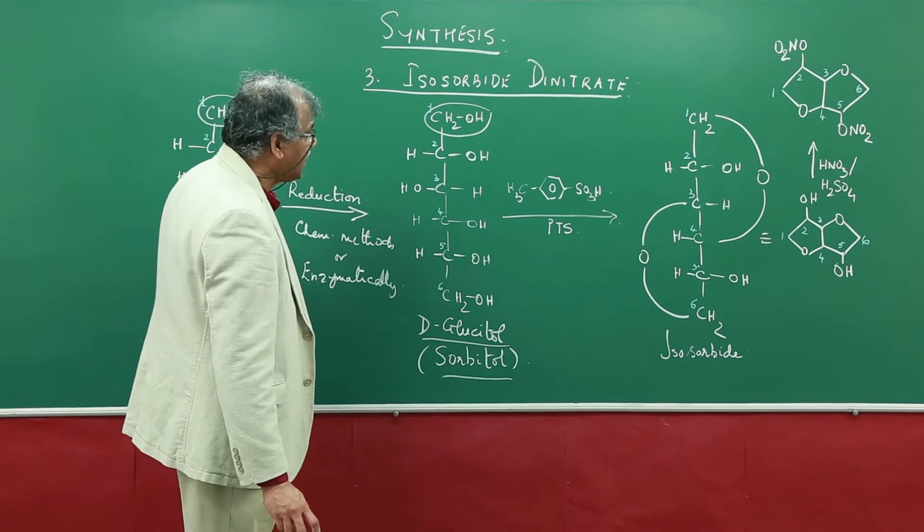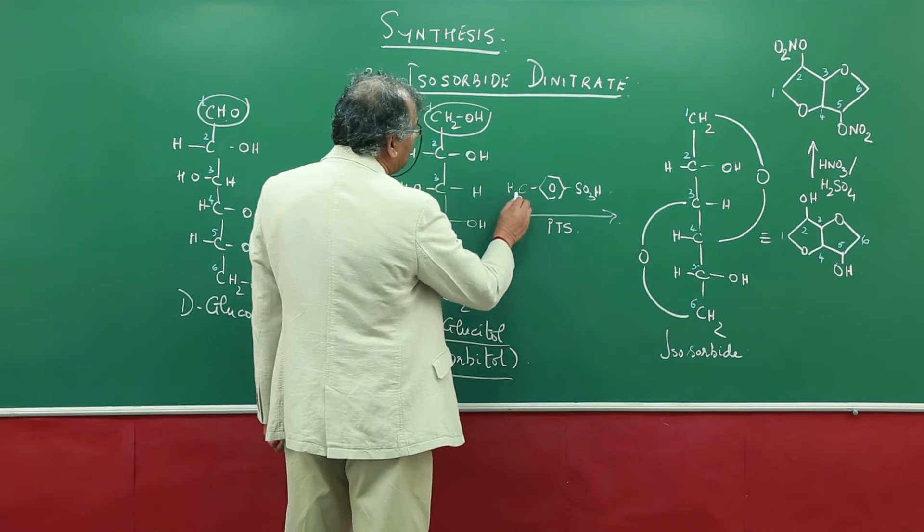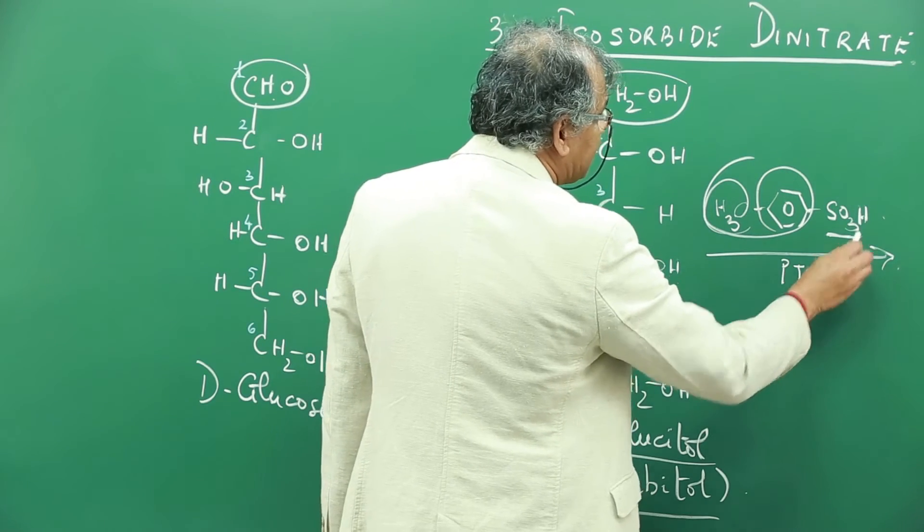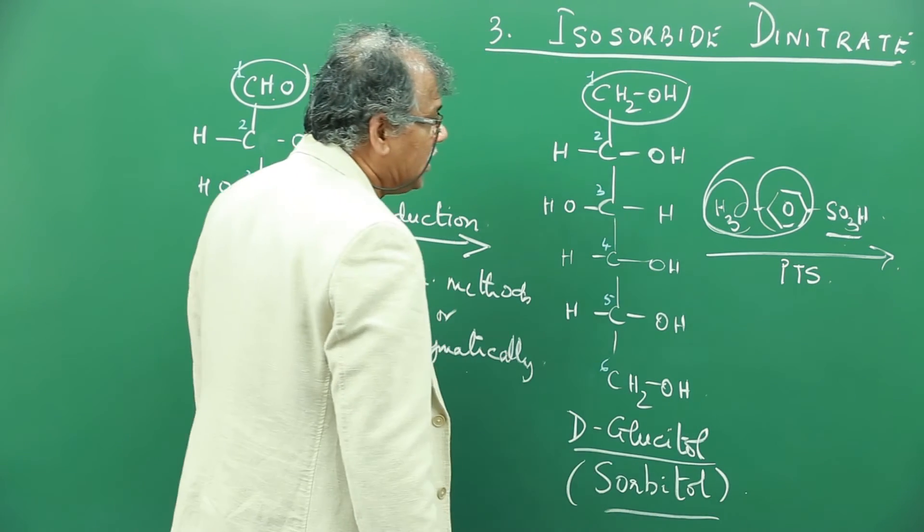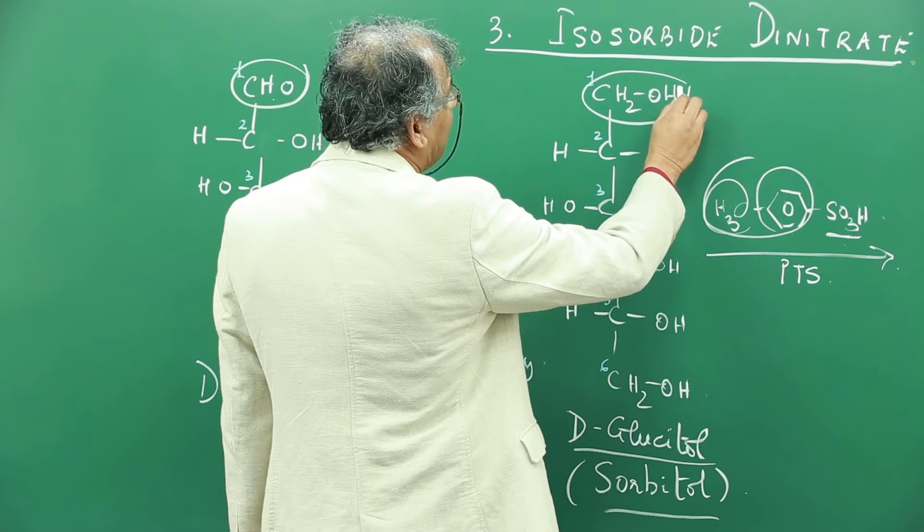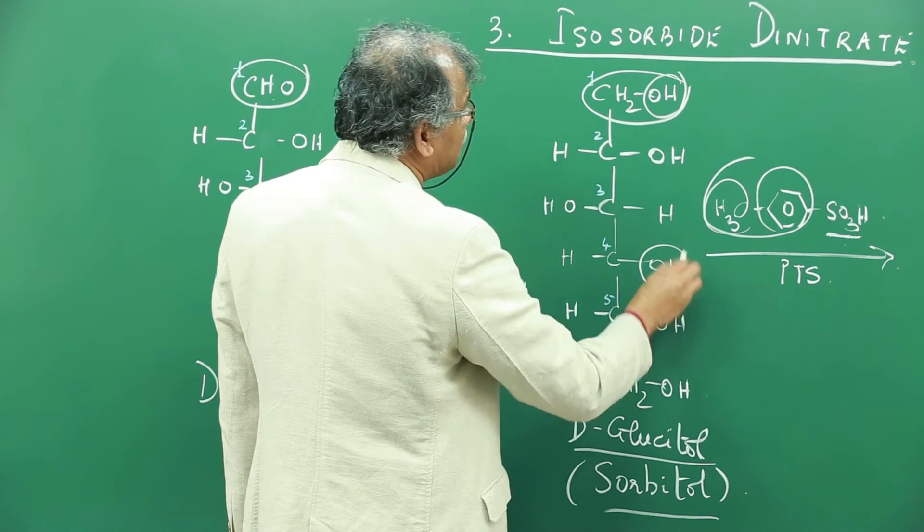So the next step is to do a reaction with para-toluenesulfonic acid. What does this acid do? It does dehydration of the alcoholic group at the first position and the fourth position.